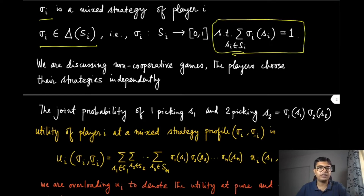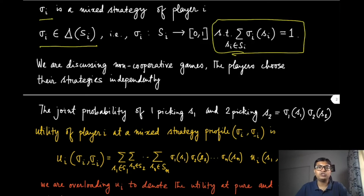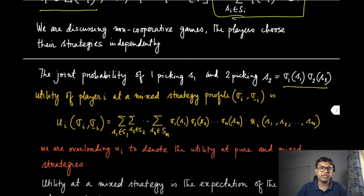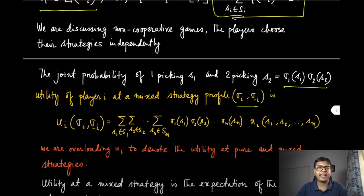Because we are discussing non-cooperative games where no player is actually talking to each other or sharing information before taking their decisions, they choose their strategies independently, and therefore the mixed strategies are also chosen independently. So all these probability distributions are actually independent of each other. When we talk about the joint probability distribution of player one picking s1 and player two picking s2, that is just given by the product of the individual marginals. Similarly, these are all analogous definitions.